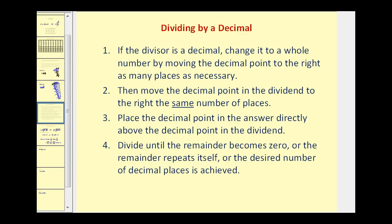Okay, now let's talk about how we're going to divide a decimal by another decimal. If the divisor is a decimal, we change it to a whole number by moving the decimal point to the right, as many places as necessary. Then we're going to move the decimal point in the dividend to the right, the same number of places. Once we complete step 1 and step 2, it's the same as we did before. We'll place a decimal point directly into the answer, and then we'll divide as we normally do.